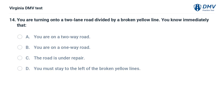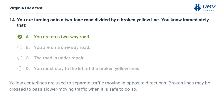You are turning onto a two-lane road divided by a broken yellow line. You know immediately that: A. You are on a two-way road, B. You are on a one-way road, C. The road is under repair, D. You must stay to the left of the broken yellow lines. The correct answer is A: You are on a two-way road. Yellow center lines are used to separate traffic moving in opposite directions. Broken lines may be crossed to pass slower-moving traffic when it is safe to do so.